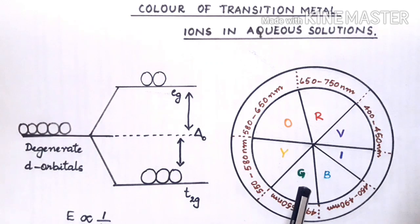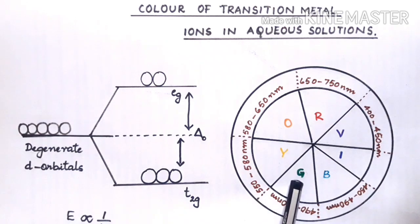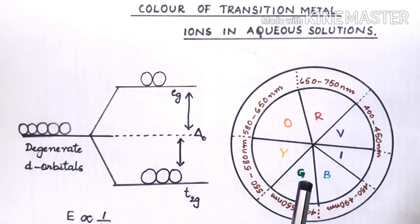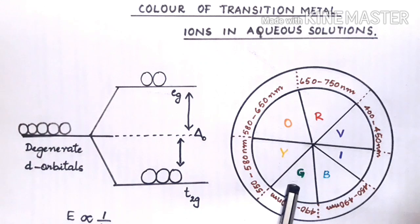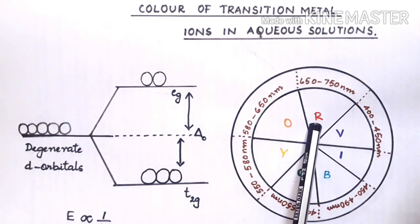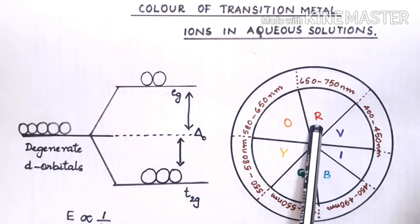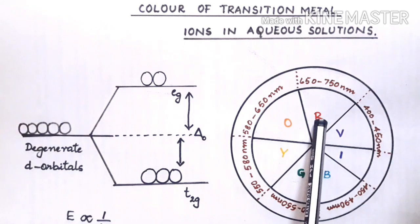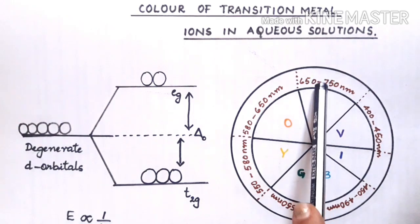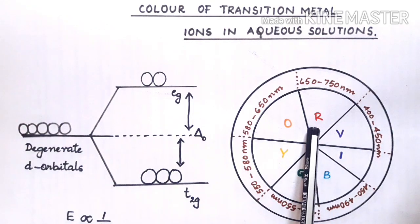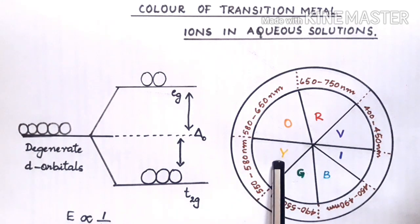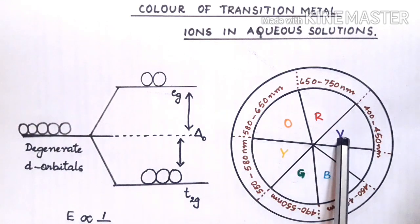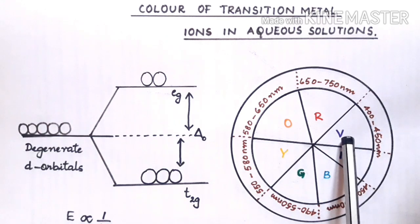Take the case with a complex which is appearing green in color. Suppose it is appearing green in color, the opposite sector will have red color in that. So it has absorbed the red component of radiation. Likewise, if a substance is appearing yellow in color, that means the violet part of the radiation has been absorbed by the complex.